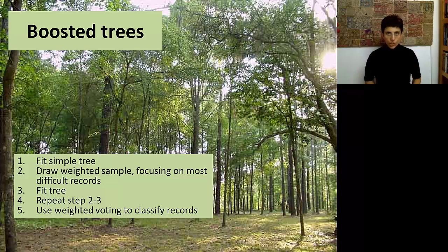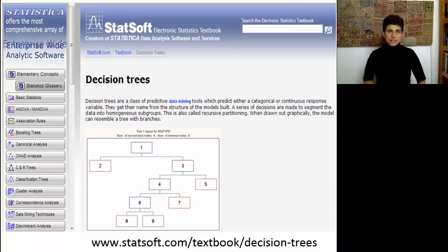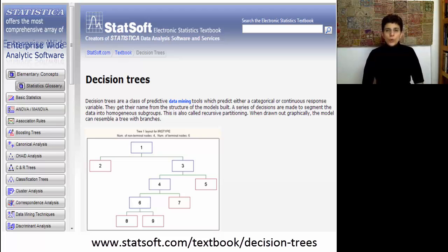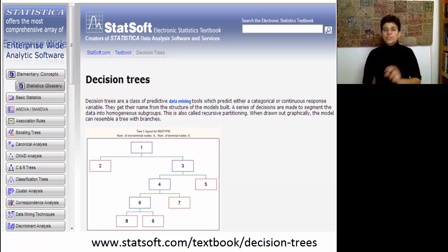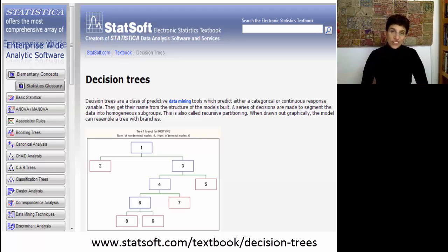These are three examples of tree extensions that have led to better results in different applications. One interesting resource is the website of StatSoft, who also has the software Statistica Miner and a full online textbook that includes some videos. In particular, they have interesting information about what they call decision trees — what we call classification and regression trees.